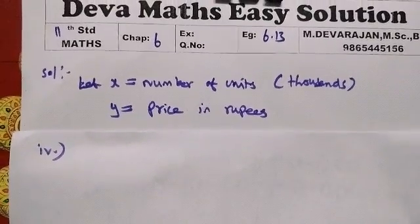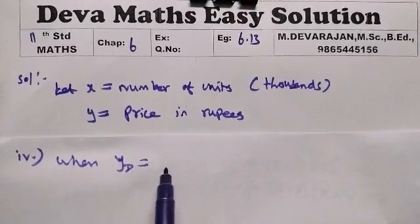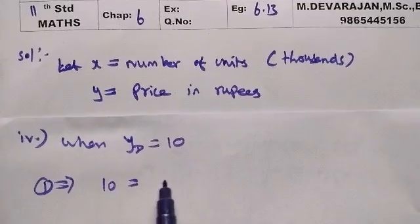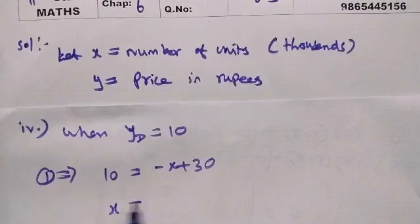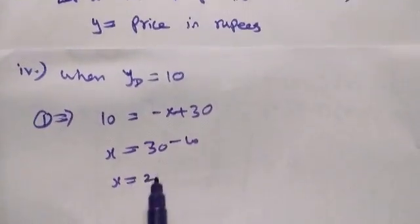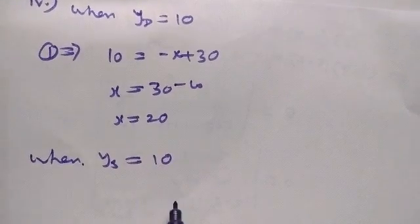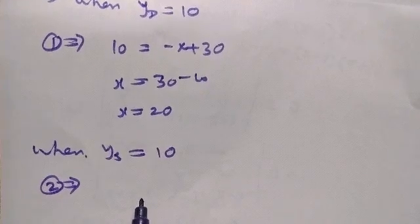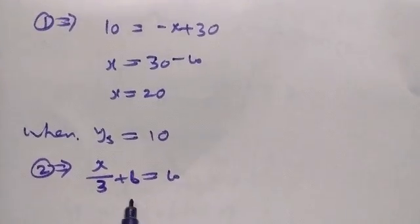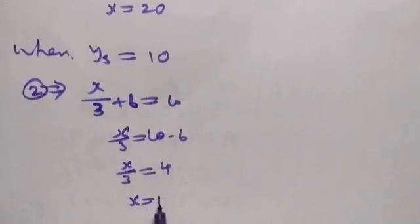Now find demand and supply when price is Rs.10. For demand when y equals 10, apply equation 1: minus x plus 30 equals 10, so x equals 30 minus 10, x equals 20. For supply when y equals 10, apply equation 2: x by 3 plus 6 equals 10, x by 3 equals 4, x equals 12.